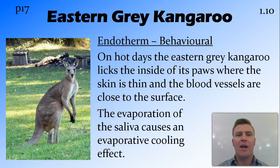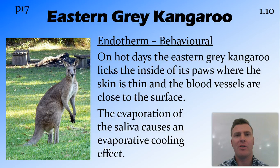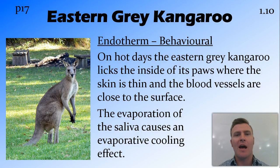The first endotherm we're going to look at is the eastern grey kangaroo. This is a behavioural adaptation — on hot days the kangaroo will lick the inside of its paws. The blood vessels are quite close to the surface there, which causes an evaporative cooling effect. Another behavioural adaptation is that during the heat of the day it will lie underneath a tree to stay out of the sun.